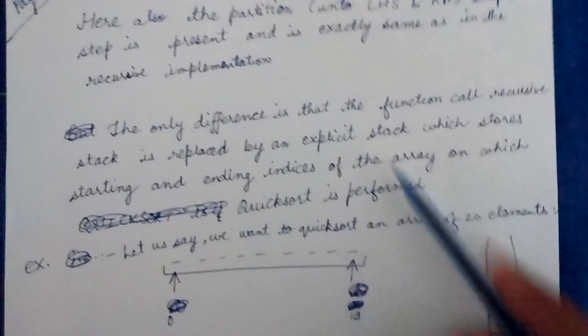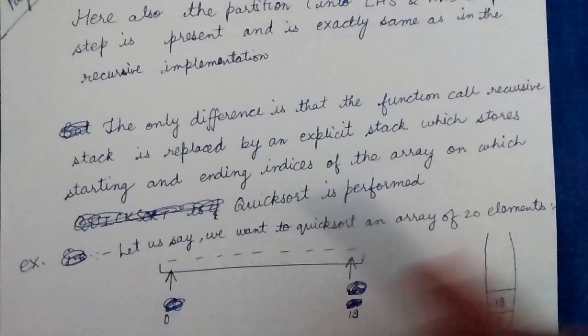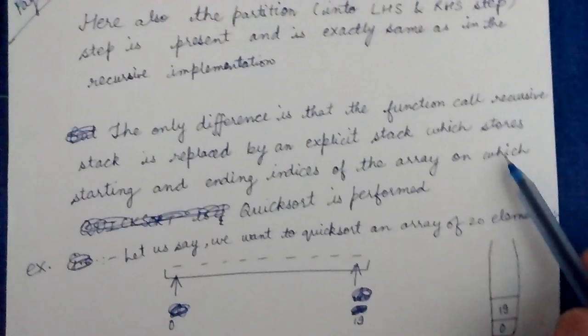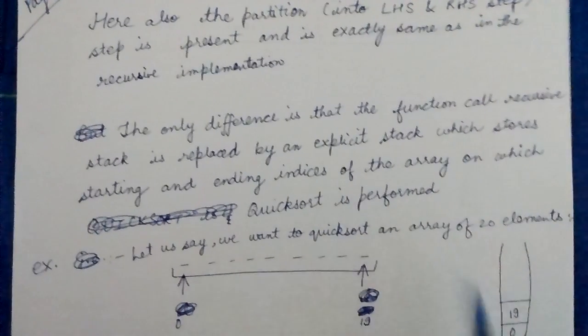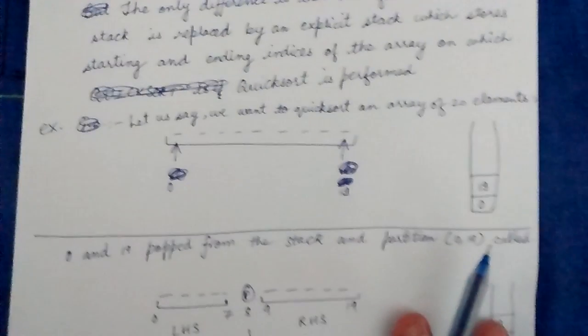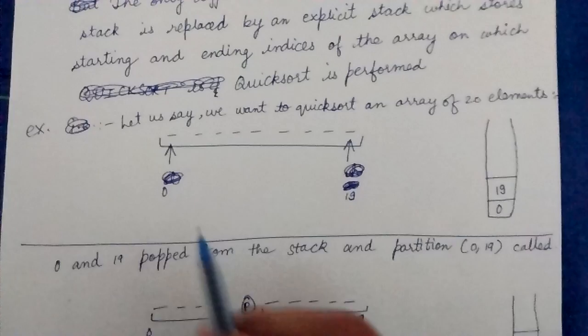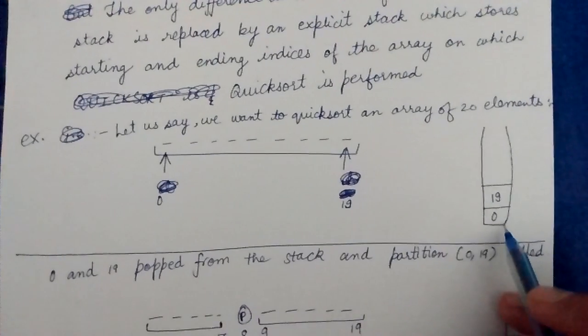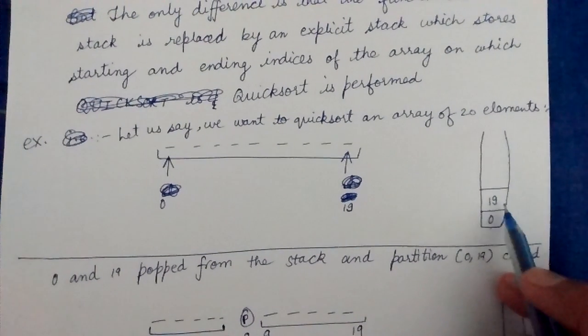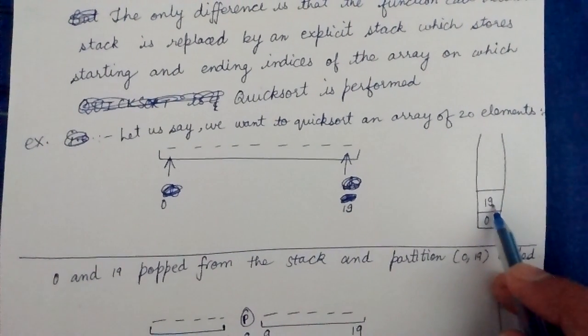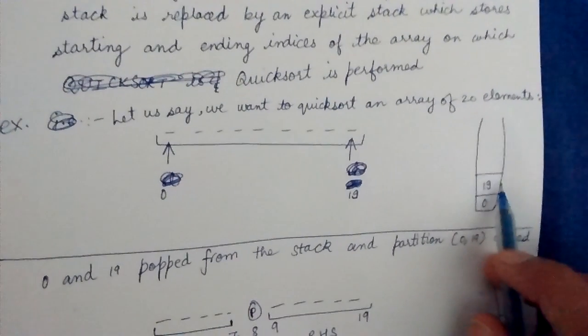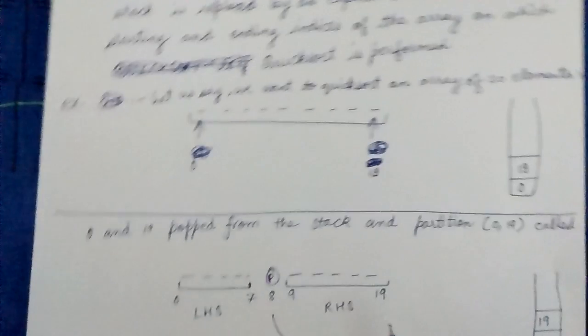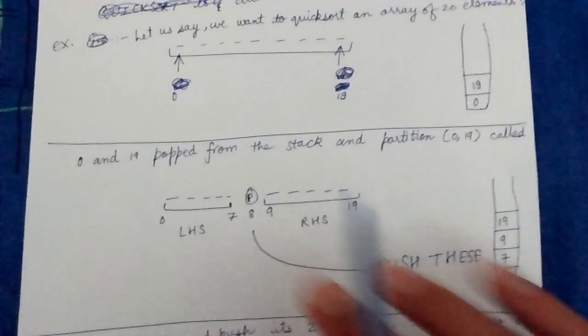The explicit stack is maintained by us and stores the starting and ending indices of the array on which we want to perform the quicksort algorithm. Let's say we want to sort from 0 to 19, so we push 0 and 19 in the stack. Then we continue doing this till the stack is empty.